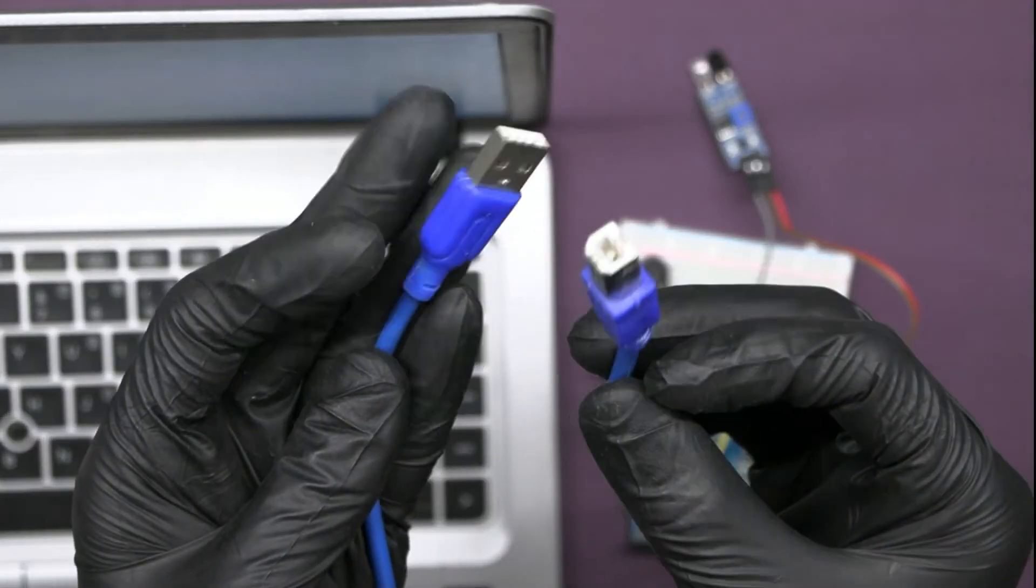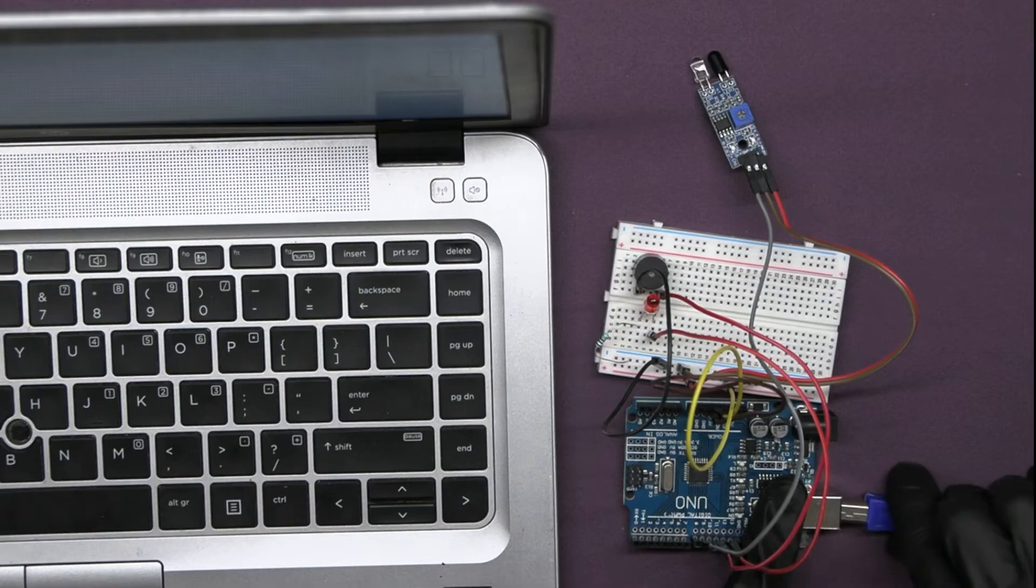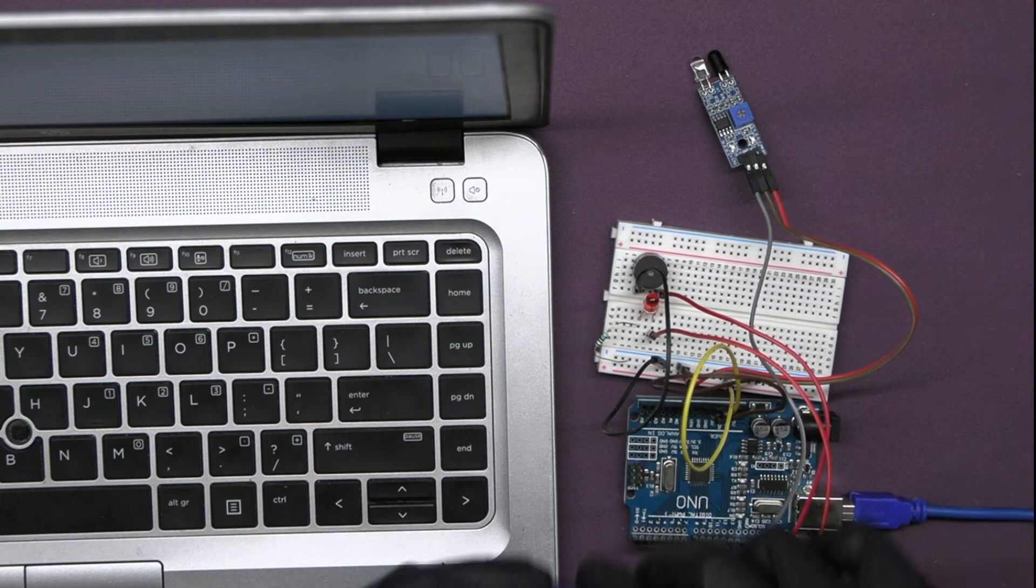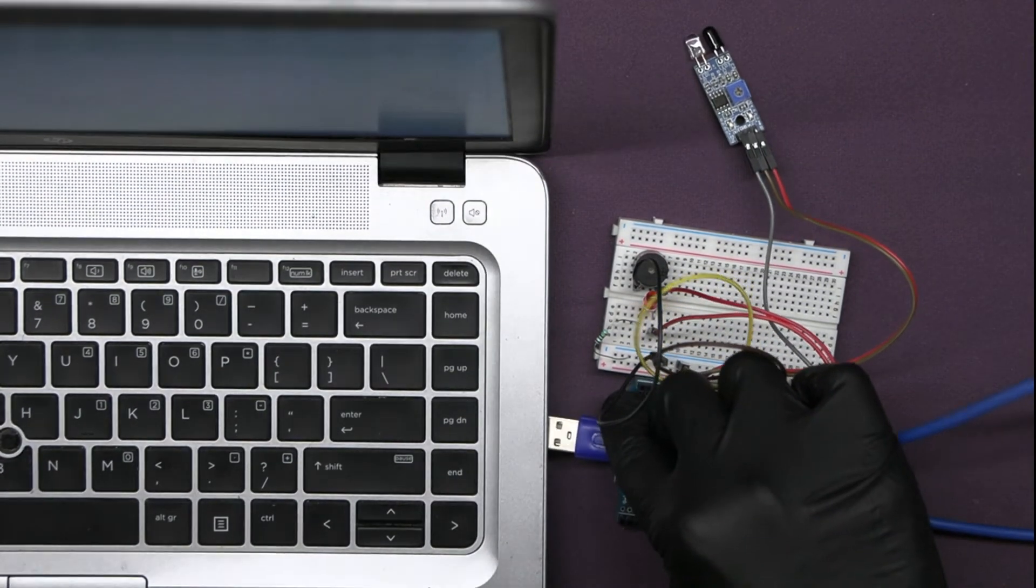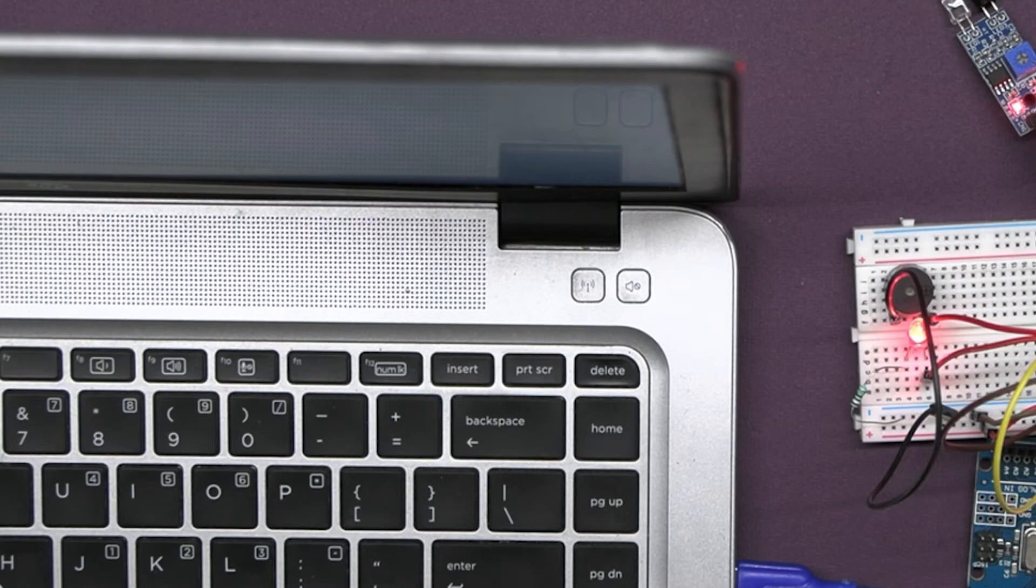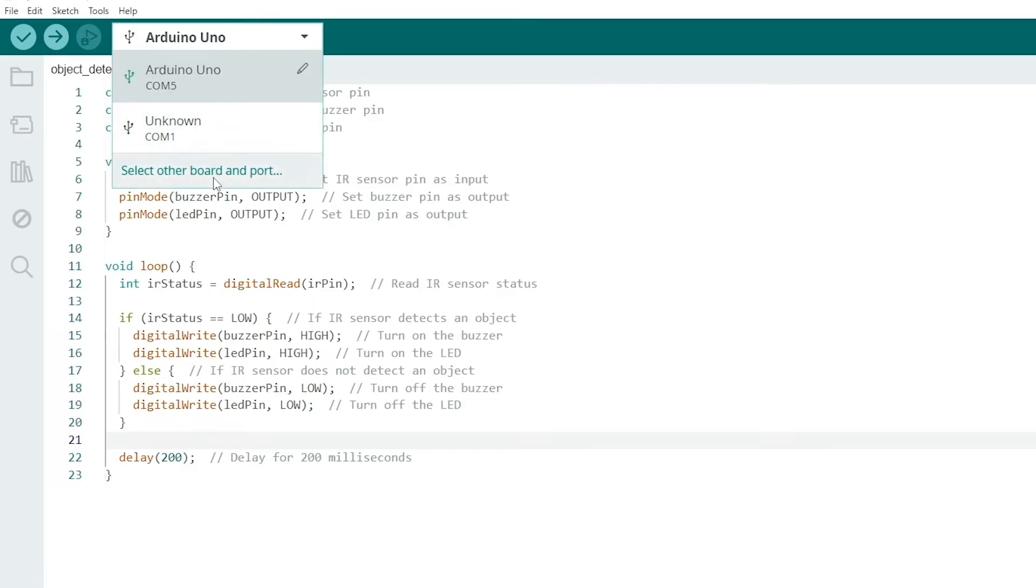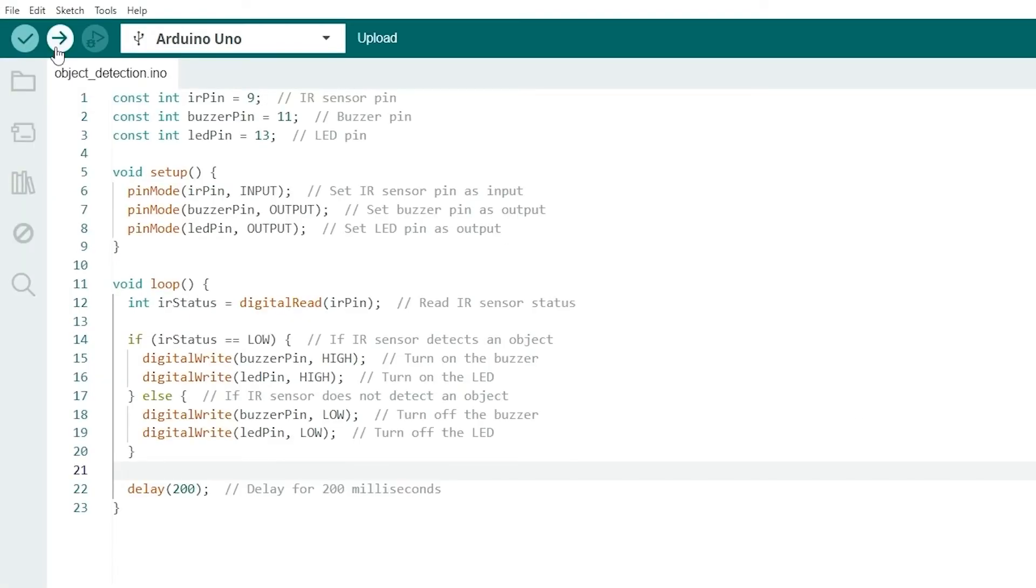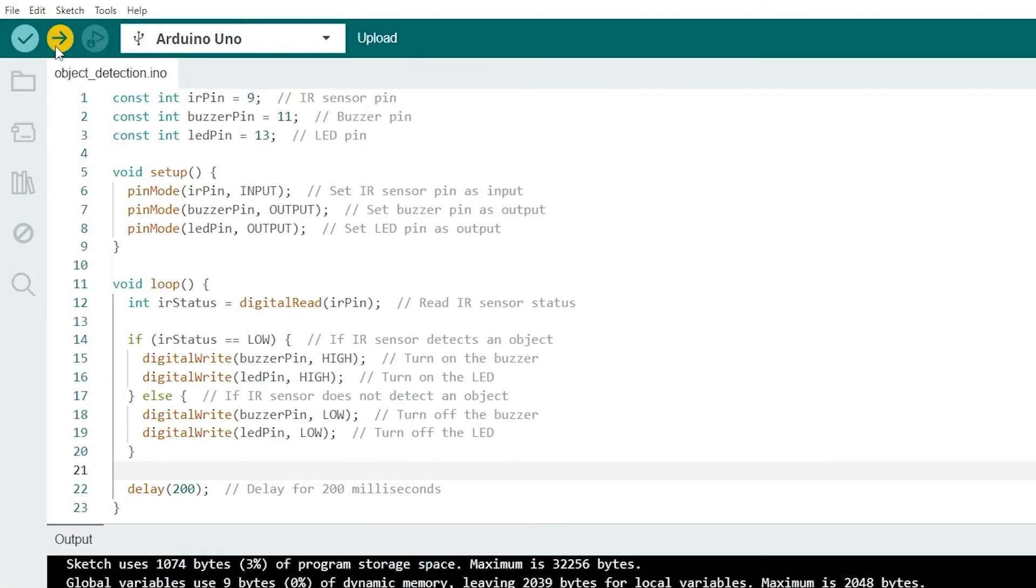Connect Arduino UNO to computer via USB cable. Select the correct board and port in Arduino IDE. Click the Upload button to upload code to Arduino.